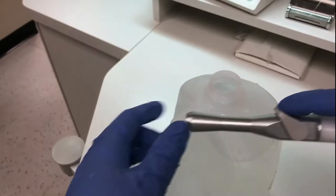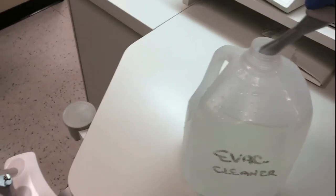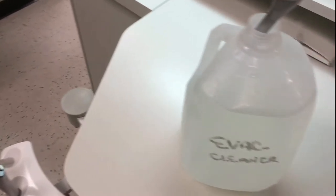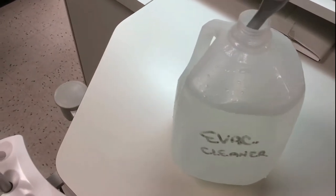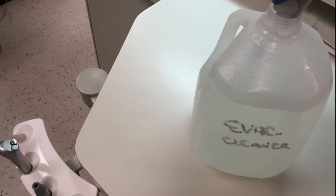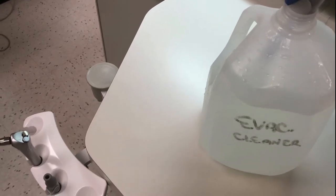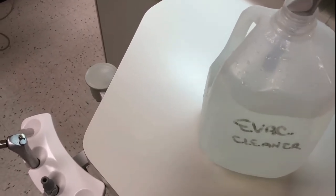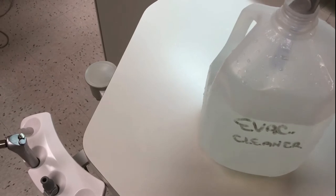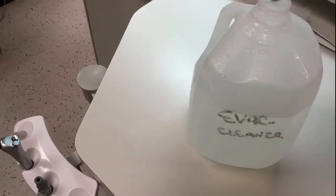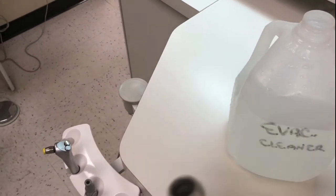Do the same thing for the HVE, making sure the tip of the HVE is placed in and out of the evacuation line cleaner. Use about a half a gallon of cleaner in each operatory.